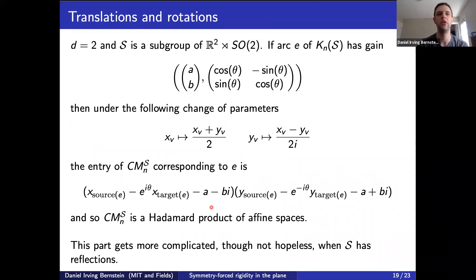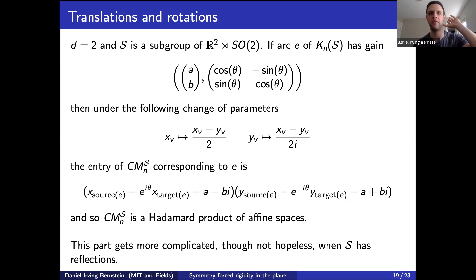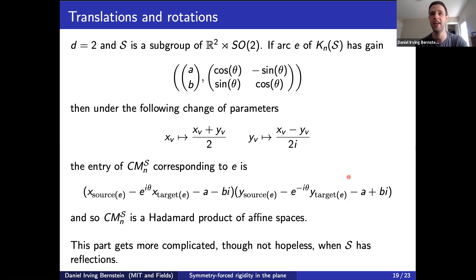The thing that makes reflections difficult is this: in the expression for the coordinate corresponding to an arc, if the arc's group label is orientation-preserving, you get one form; if orientation-reversing, the x-target and y-target coordinates switch. This doesn't matter in the purely orientation-preserving case because you can swap the roles of x and y, leaving the matroid unchanged. But when you combine reflections and rotations, this no longer works unless there's some projective way to handle it.